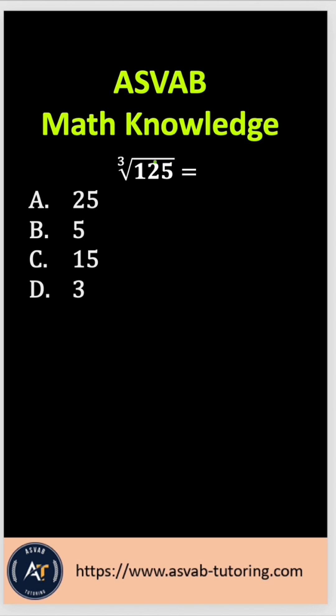If you want to find the cube root of a number, the easiest way you can do it, take the answer option and multiply by itself three times.